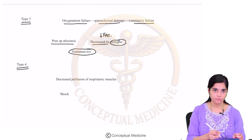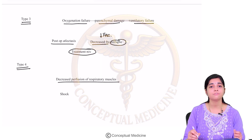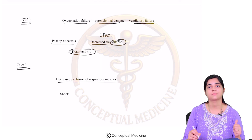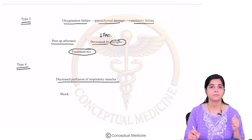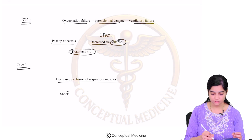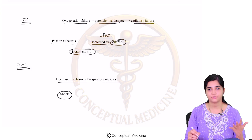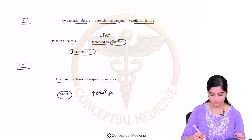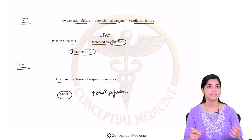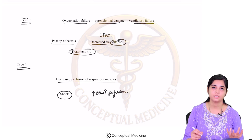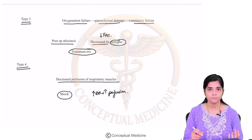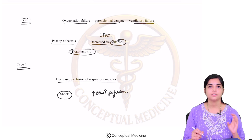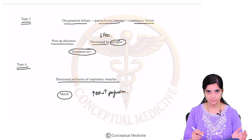Type 4 respiratory failure occurs because of decreased perfusion to the respiratory muscles, which is commonly seen in shock. Management of type 4 involves increasing the blood pressure, which in turn increases perfusion to the respiratory muscles. This covers the different types of respiratory failure.